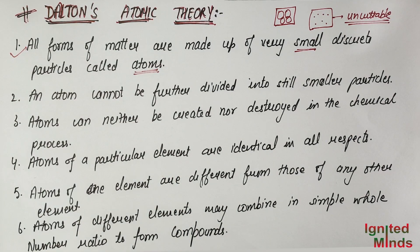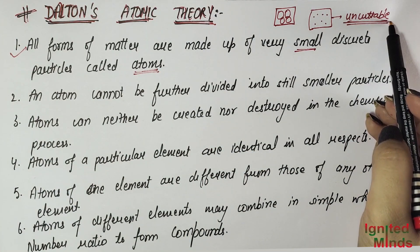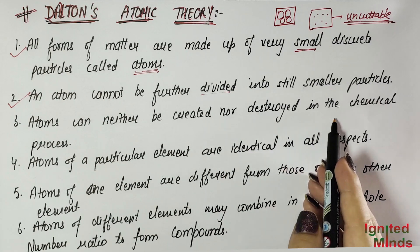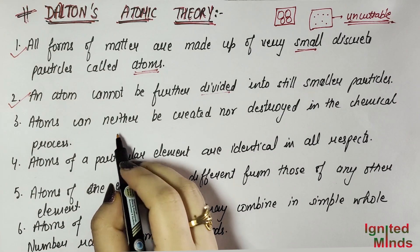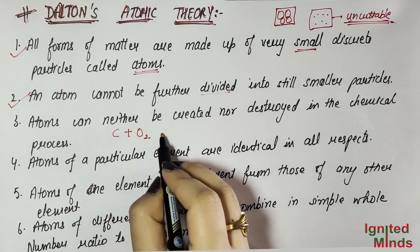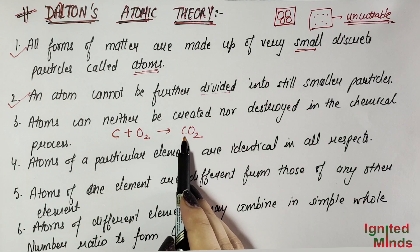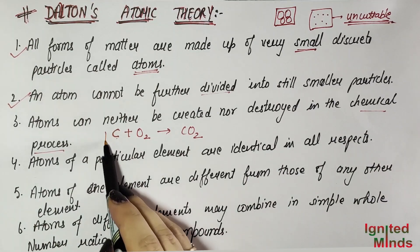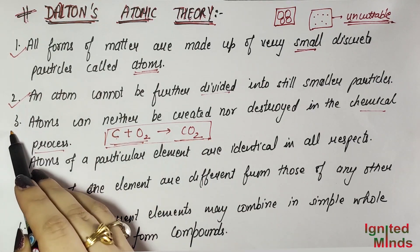The second postulate is: an atom cannot be further divided into still smaller particles. As I told you, it is uncuttable — we cannot divide it into other smaller particles. The third postulate is: atoms can neither be created nor destroyed in a chemical process. This relates to the Law of Conservation of Mass. For example, in C + O₂ → CO₂, the carbon atoms are 1 on each side and the oxygen atoms are 2 on each side — atoms are conserved.